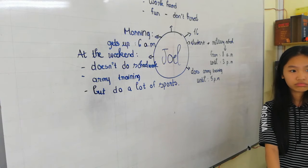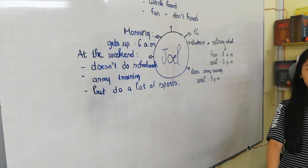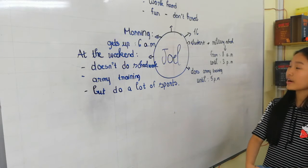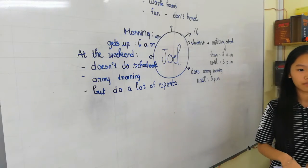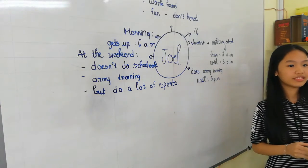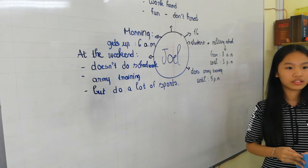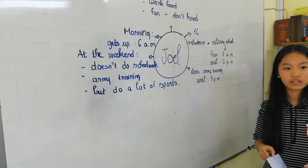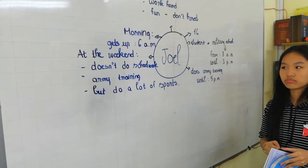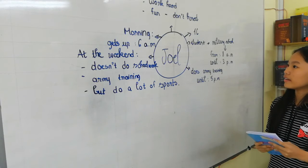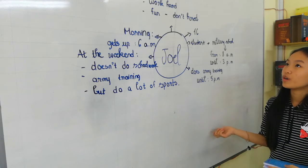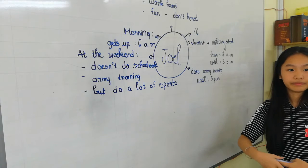This is a normal school or this is a military school? It's a military school. Okay. And this lesson, this red map, you describe about Joe or you describe about Joe's activities at school? It's Joe's life. Very good. Joe's life.